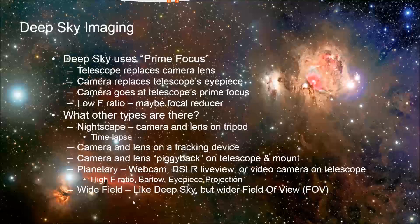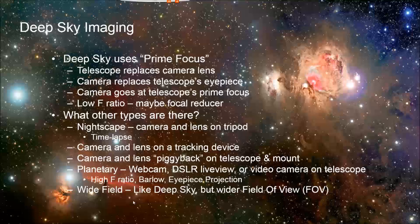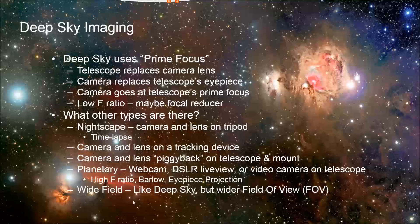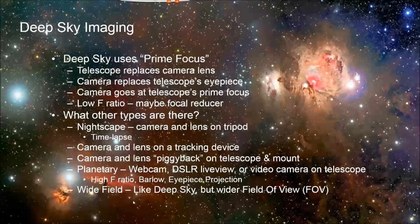The focus here is on deep sky, and that uses something called prime focus. You've got a DSLR or a CCD camera, and the telescope simply replaces the camera lens. Another way to look at it: if you've got a telescope and an eyepiece, the camera is replacing the eyepiece. That also means the camera is going at what's called the prime focus of the telescope — the first place where the image comes to focus.